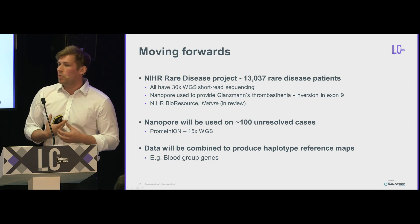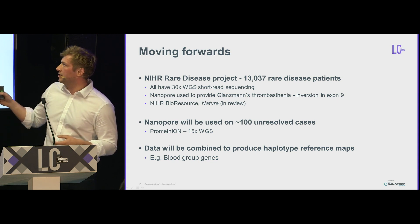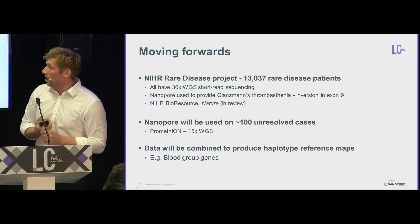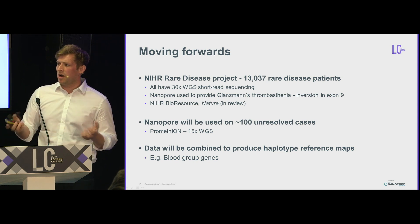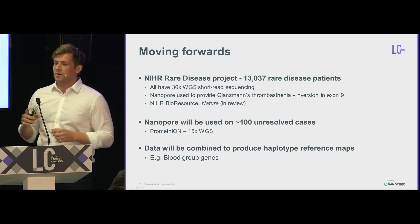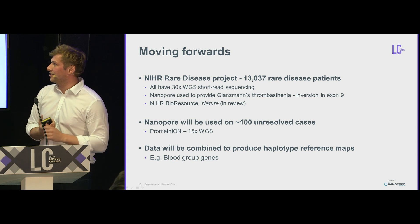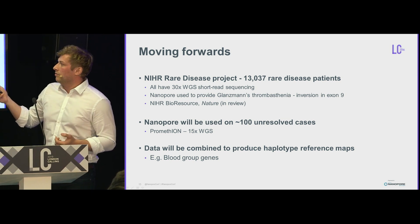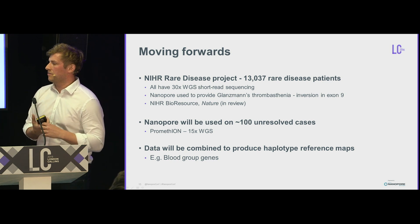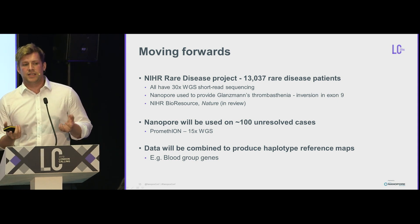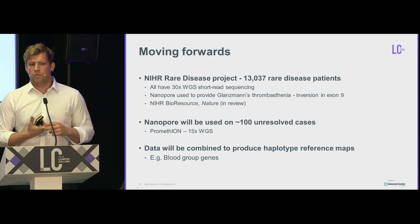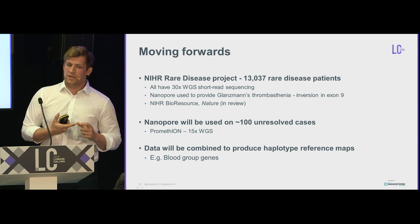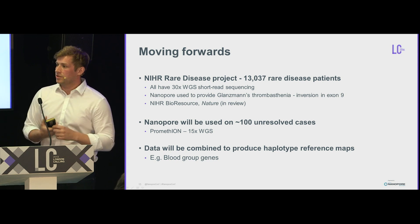Moving forward: the NIHR Rare Disease Project has 13,000 patients all sequenced as part of the initial phases of Genomics England's 100,000 Genomes Project, with 30x whole genome short-read sequencing available. We already used Nanopore to resolve a Glanzmann's case involving an inversion with a duplication in Exon 9 — that's in a Nature paper currently in review. We have about 100 unresolved cases with signal in short reads of genomic recombination in clinically relevant genes; these will all go on a PromethION for 15x whole genome sequencing, then we'll combine the datasets to solve the clinical cases.